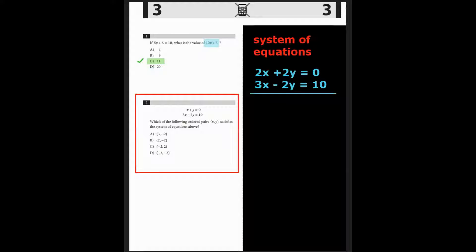Question 2. Which of the following ordered pairs x, y satisfies the system of equations above? The system of equations has two equations, x plus y equals 10, and 3x minus 2y equals 10.